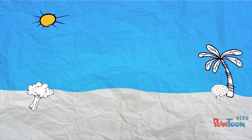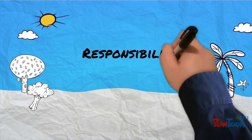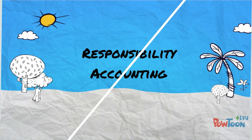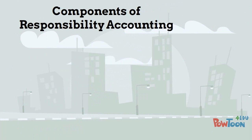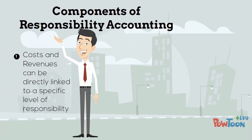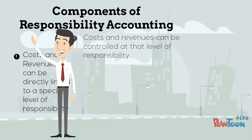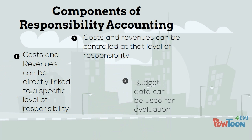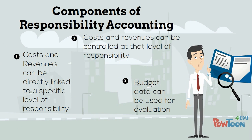In this video, we will discuss the concepts of responsibility accounting. The primary components of a responsibility accounting system are: costs and revenues can be directly linked to a specific level of responsibility, costs and revenues can be controlled at that level of responsibility, and budget data can be used for evaluation.